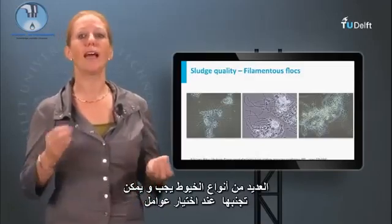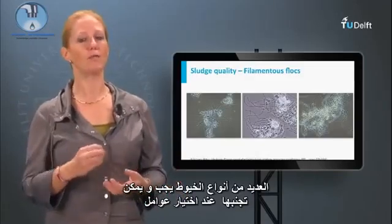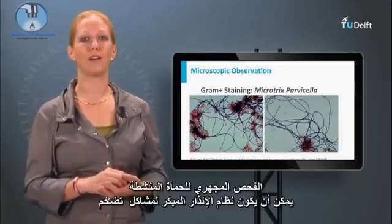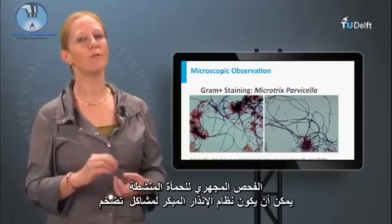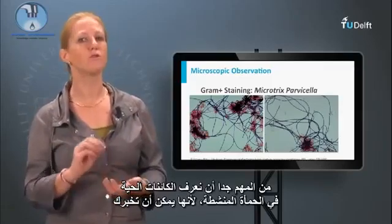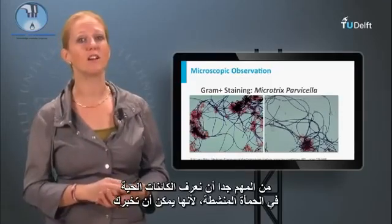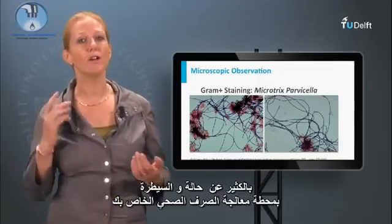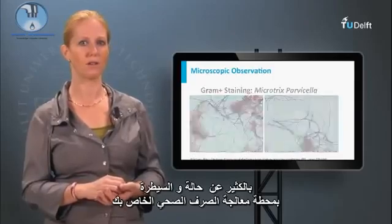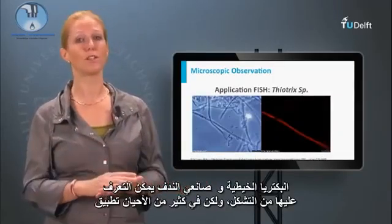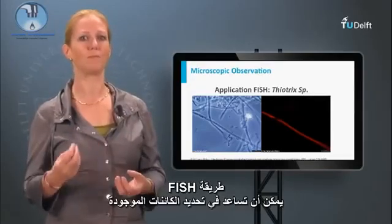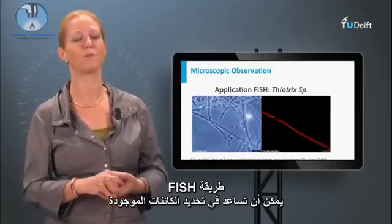Many types of filaments should and can be avoided when the right process parameters are chosen. Microscopic observation of activated sludge can be an early warning system for bulking sludge problems. It is very important to recognize the organisms in the activated sludge, since they can tell you a lot about the condition and control of your sewage treatment plant. Filaments as well as flock formers could be recognized on morphology, but often applied FISH methods could help identifying the microorganisms present.